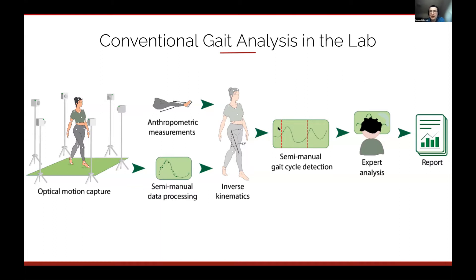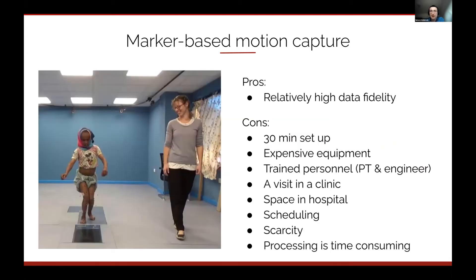The joint angle trajectories are then segmented into pieces, with each piece corresponding to the time between foot strikes. This normalizes the data so that curves are comparable between subjects. All that data then goes to an expert who reads the curves, runs scripts, and generates a report for the doctor. The system produces very high quality data.